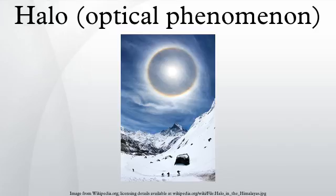A halo is an optical phenomenon produced by light interacting with ice crystals suspended in the atmosphere, resulting in a wide variety of colored or white rings, arcs and spots in the sky. Many halos are near the sun or moon, but others occur elsewhere or even in the opposite part of the sky. Among the most well-known halo types are the circular halo, light pillars and sun dogs, but there are many more.